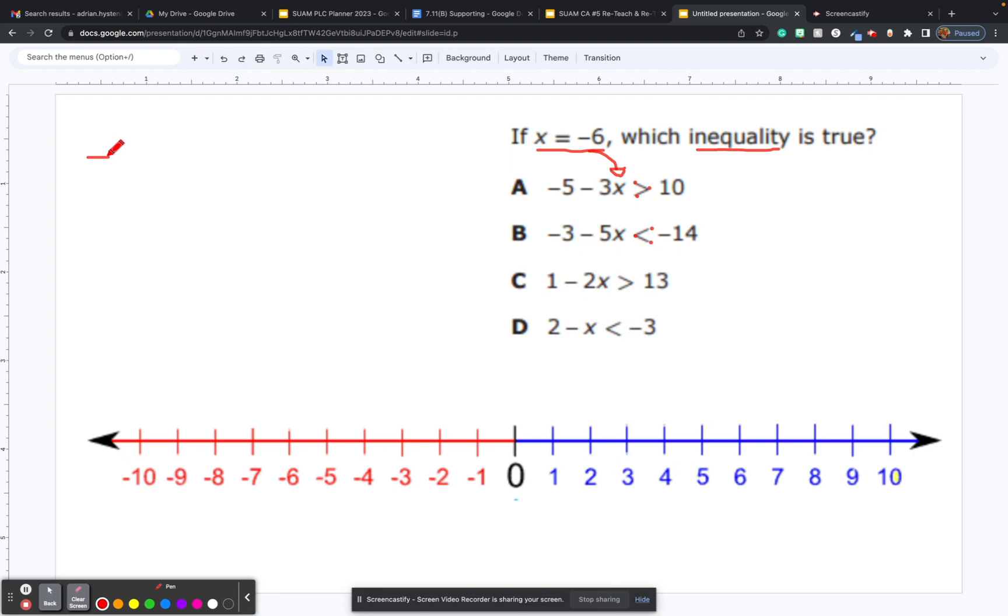A here could be negative 5 minus 3, but instead of x, right here, instead of that x, we're going to plug in negative 6. Is greater than 10. Let's see if this inequality is true.